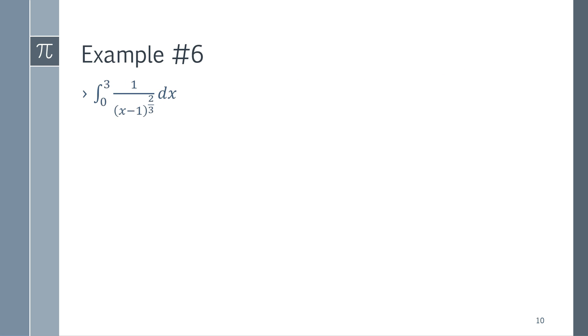Finally, the most annoying case, what if our vertical asymptote is somewhere in the middle of our bounds of integration? So, here, there's a vertical asymptote at x equals 1.